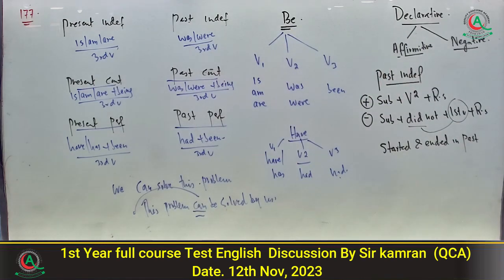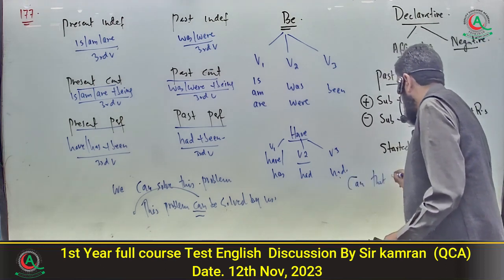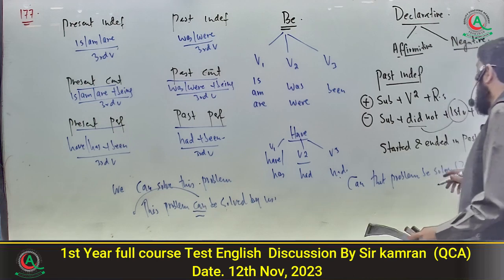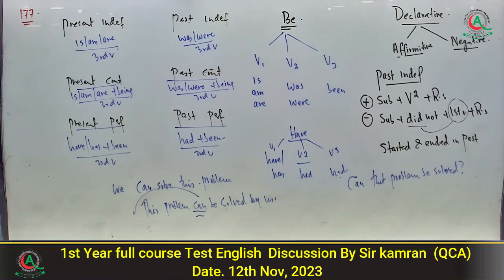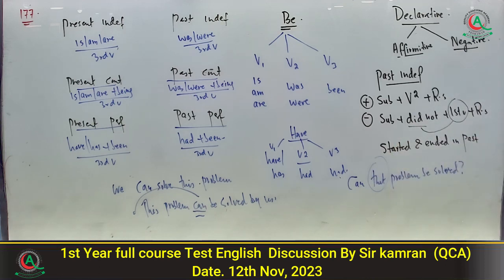Interrogative بنانے کے لئے can کو start میں لے کر آئیں اور آخر میں question mark لگائیں۔ Option c correct ہے۔ کبھی کبھی confusion ہوتا ہے کہ 'that problem' لکھ دیں — لیکن یاد رہے کہ یہ active/passive ہے، direct/indirect نہیں، اس لئے 'that' نہیں آئے گا۔ Option number C is the correct one۔